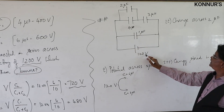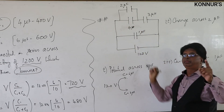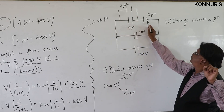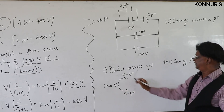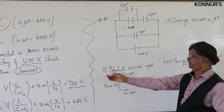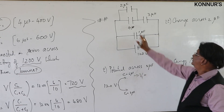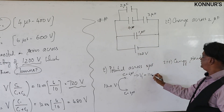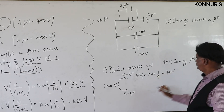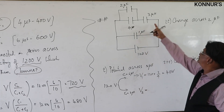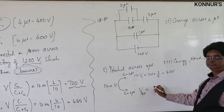This 120 volts will divide between the series combination of 6 microfarad and 3 microfarad. Using the voltage divider: V across 6 microfarad = 120 × (3/9) = 40 volts. Therefore, voltage across 3 microfarad = 120 × (6/9) = 80 volts.